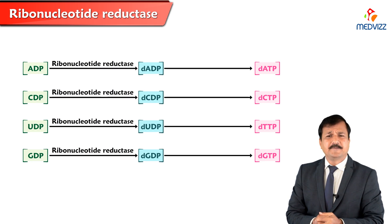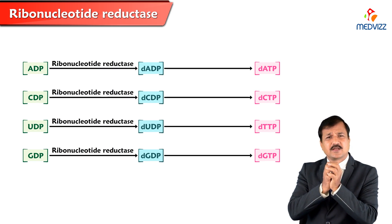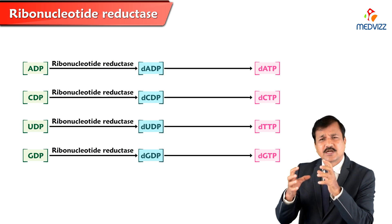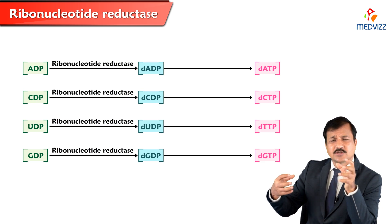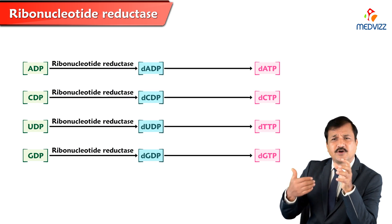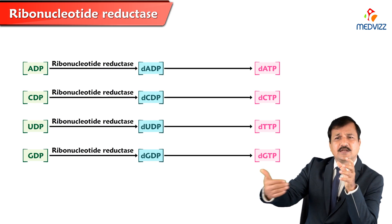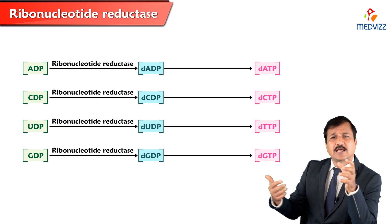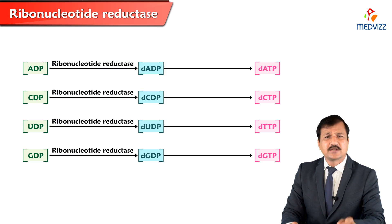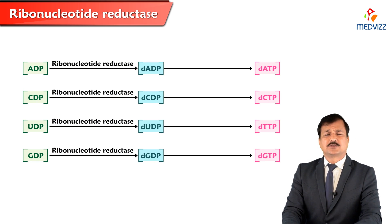Since it is such an important enzyme converting all nucleoside diphosphates into deoxynucleoside diphosphates, this all happens at one active site — individual nucleoside diphosphates bind to the active site and come out as deoxynucleoside diphosphates. ADP comes out as dADP, CDP comes out as dCDP, UDP comes out as dUDP. Since there is only one active site, the enzyme must be highly regulated to ensure a balanced synthesis of all deoxynucleoside triphosphates.